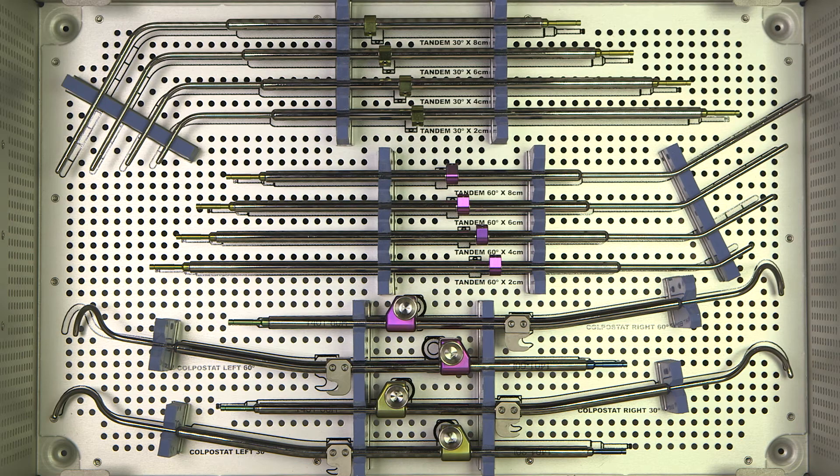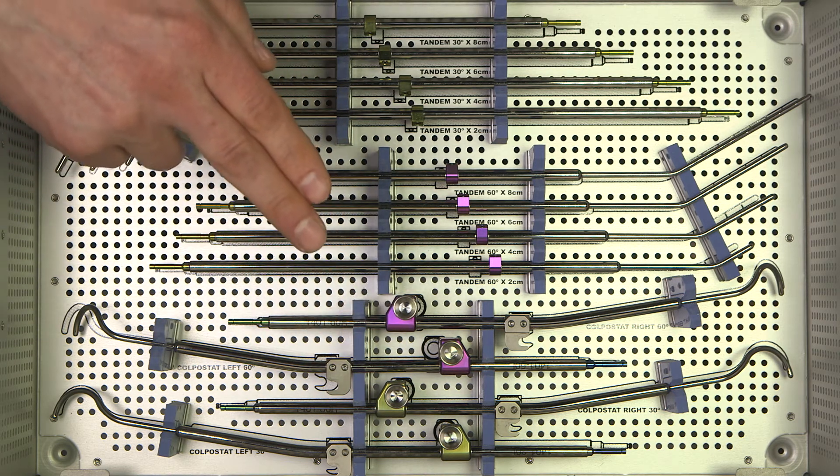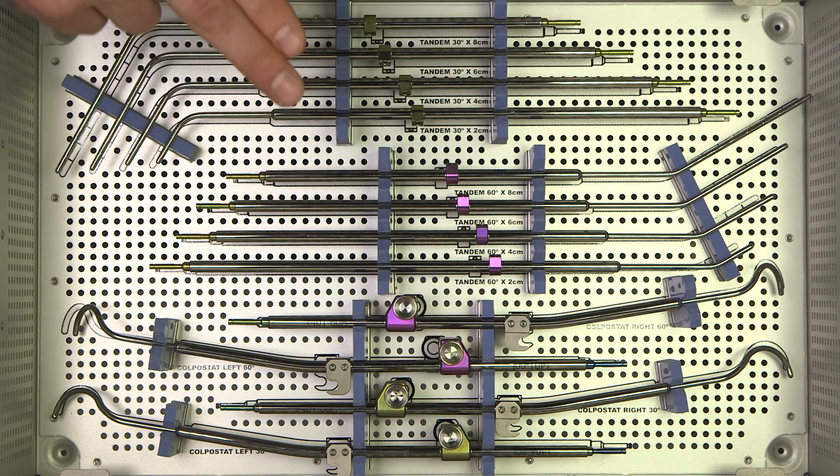The 3-channel split ring applicator combines the benefits of the flexible Fletcher applicator with the fixed geometry of the ring applicator. Due to its unique patented split ring design, it allows for easy insertion into the patient and due to the snap and angle lock, it allows for easy recreation of the ovoid angles from fraction to fraction. The set consists of rings and I.U. tubes in different angles and lengths.